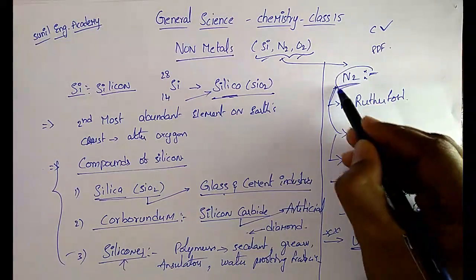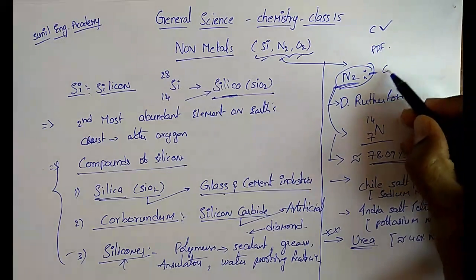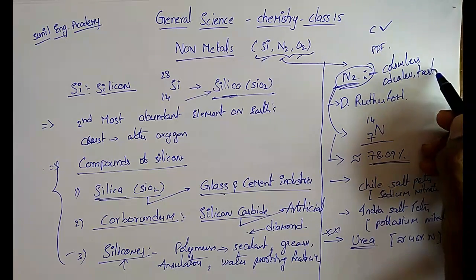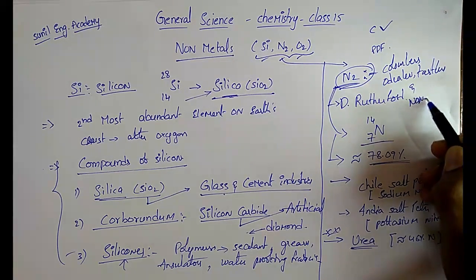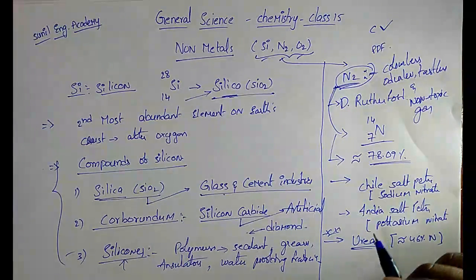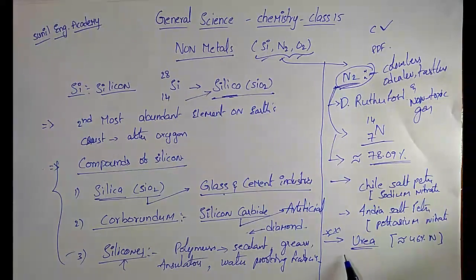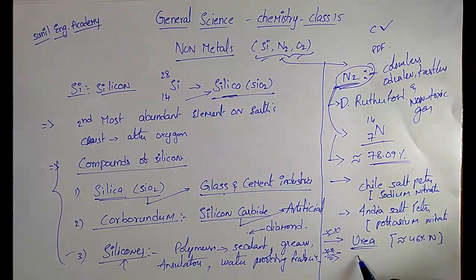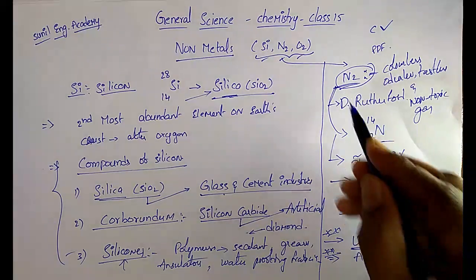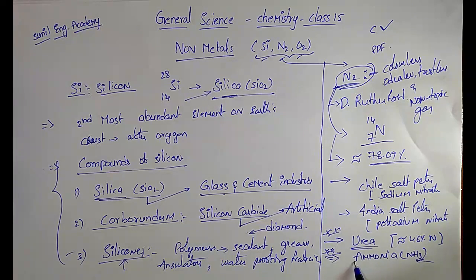Nitrogen gas is colorless, odorless, tasteless, and non-toxic. Nitrogen is used for manufacturing of ammonia (NH3). Liquid ammonia is used as a refrigerant. Liquid nitrogen is also used as a refrigerant.